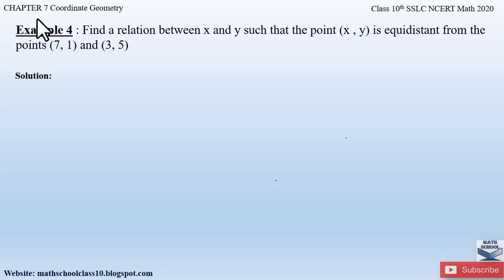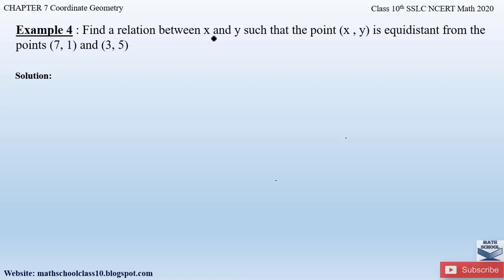Example number 4 from chapter 7, Coordinate Geometry says: find a relation between x and y such that the point (x, y) is equidistant from the point (7, 1) and (3, 5). So according to the question, we have to find out a relationship between the variables x and y such that if we consider a point A with coordinates (x, y), this point is equidistant from the points (7, 1) and (3, 5).